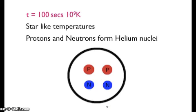At T equals 100 seconds, one minute and 40 seconds after the Big Bang, the temperature was 10 to the 9 Kelvin. Conditions were star-like. Protons and neutrons could form helium nuclei.